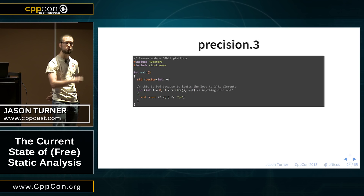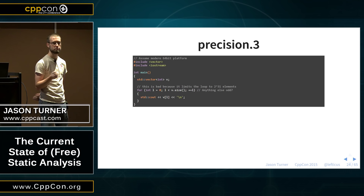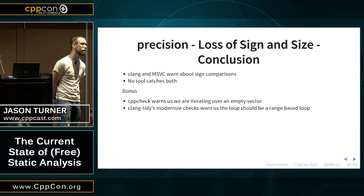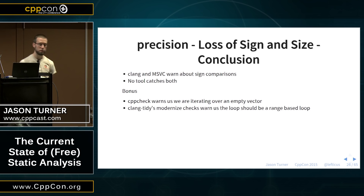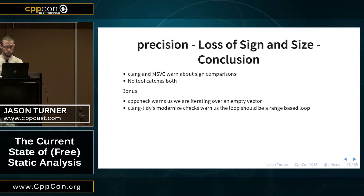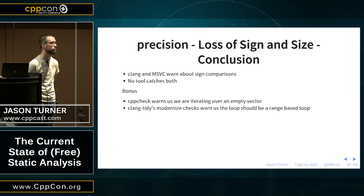In a more general sense, how might we make this code better? A ranged-for loop — exactly. Clang and Visual Studio warn about signed comparisons, but no tool is warning that we're comparing a 32-bit to a 64-bit integer. As a bonus, CppCheck does a deep enough analysis to tell us we're iterating over an empty vector. And if anyone has used Clang modernize, it can actually identify that this should have been a range-based for loop and the whole problem would have gone away.